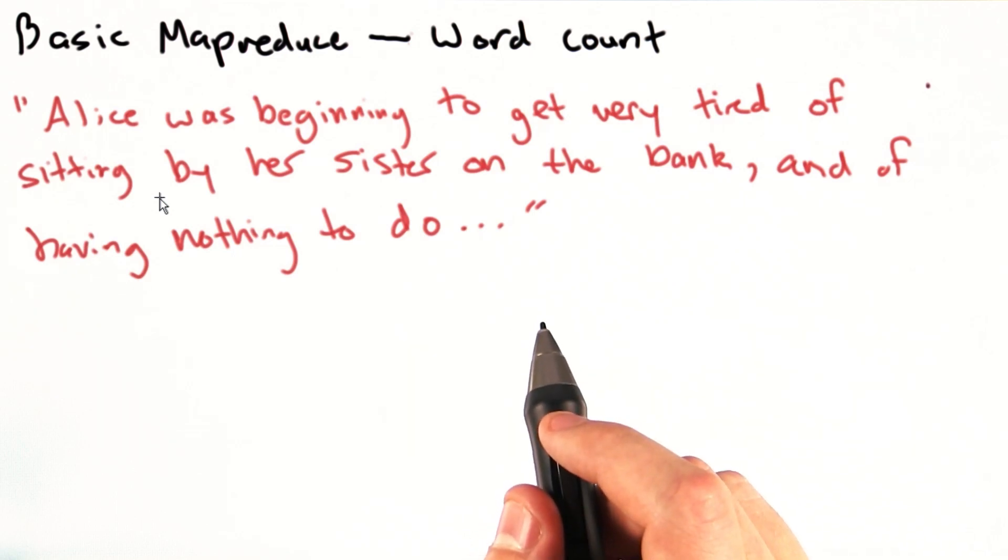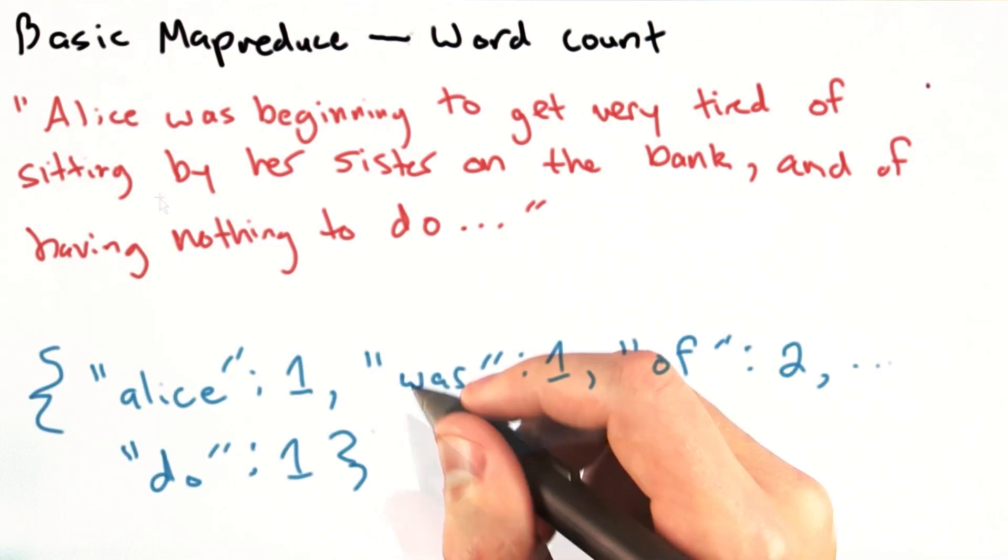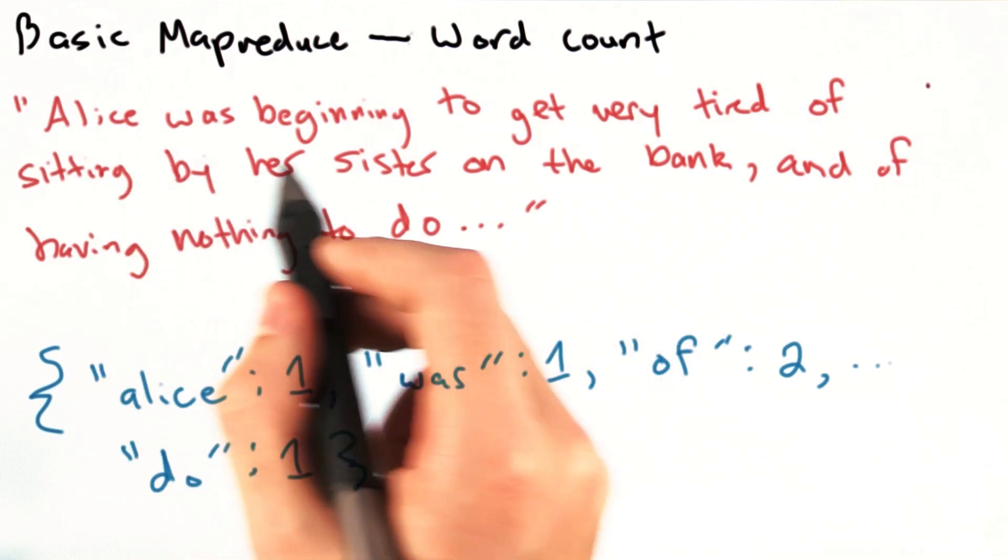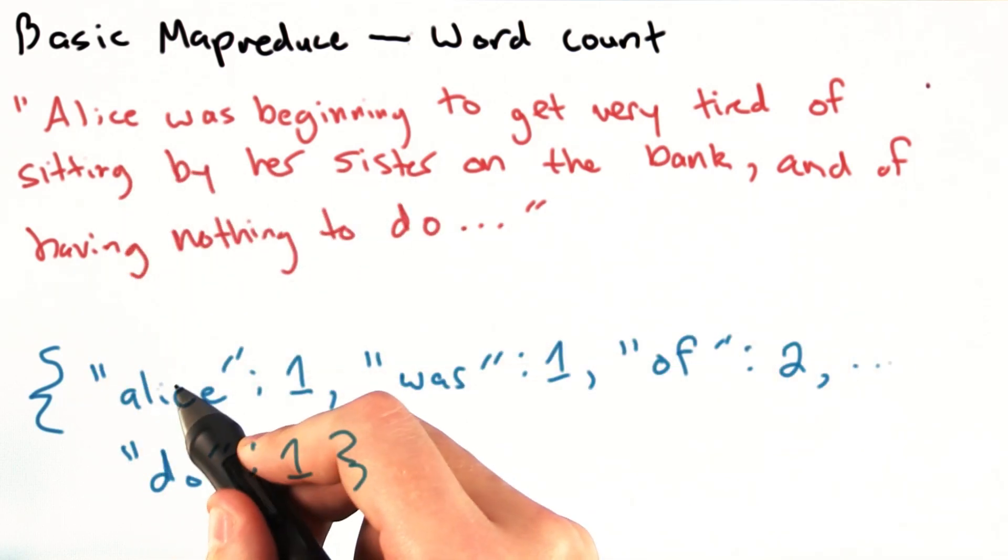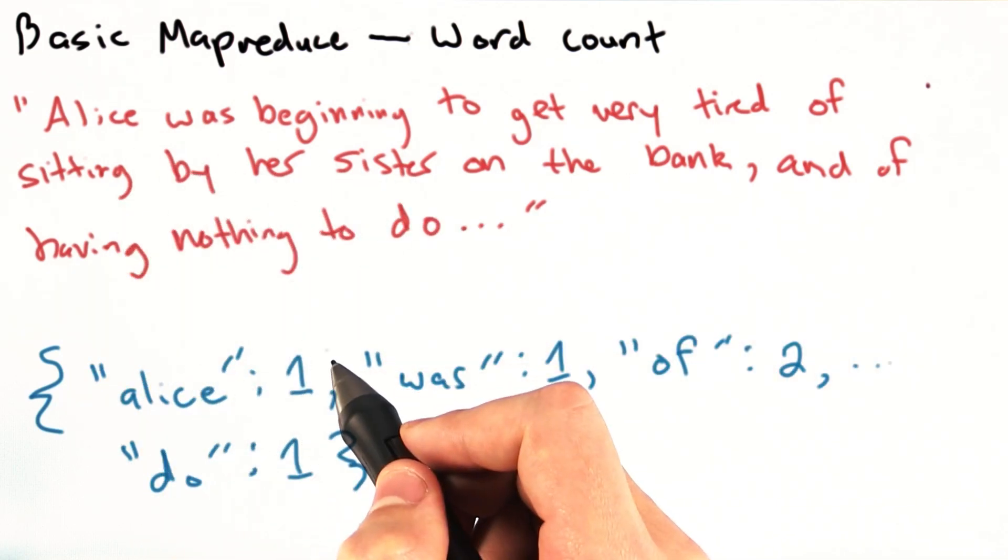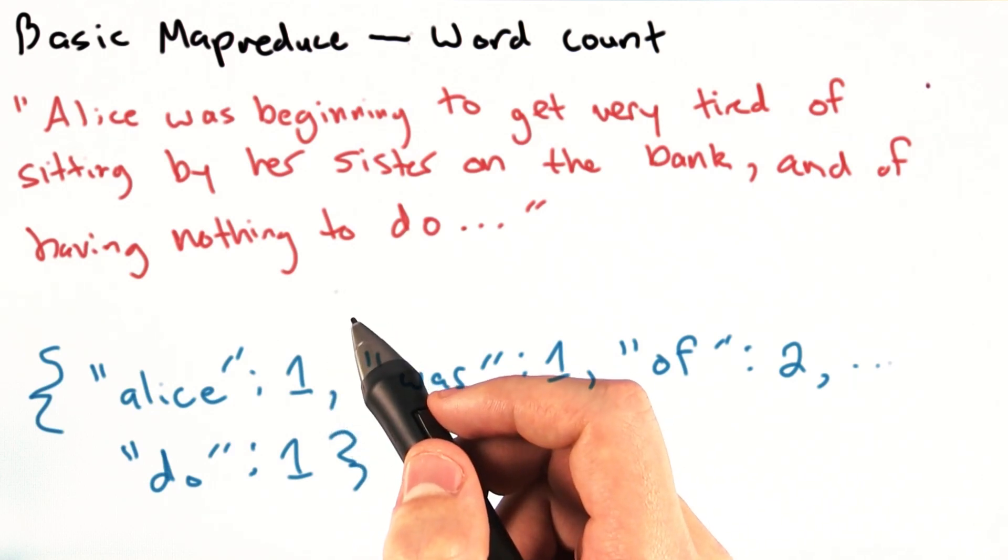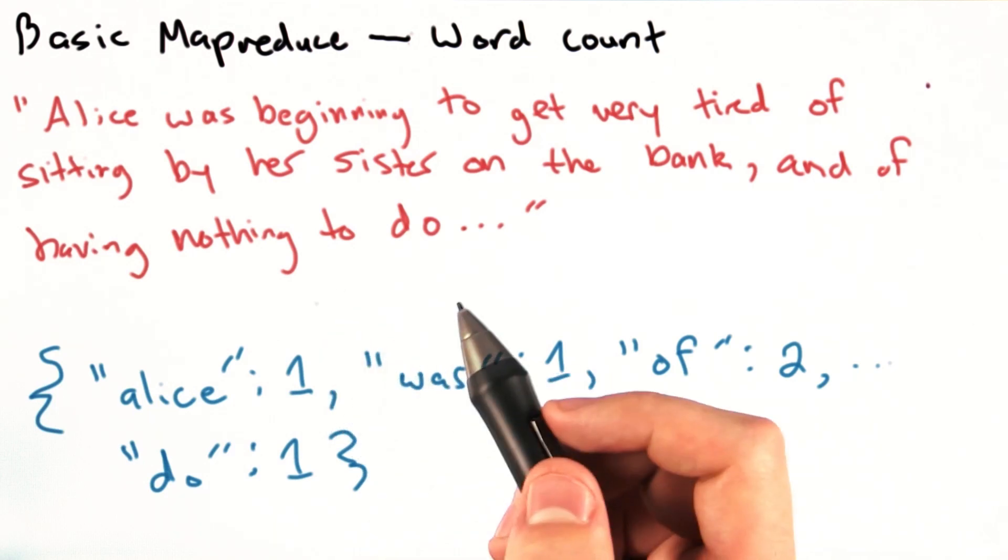If I wanted to solve this problem without MapReduce, I might create a Python dictionary consisting of all the words and their counts. I could go through the document and say, for each word in the document, if there's a key for that word, add 1. Otherwise, set the initial value for that key equal to 1.